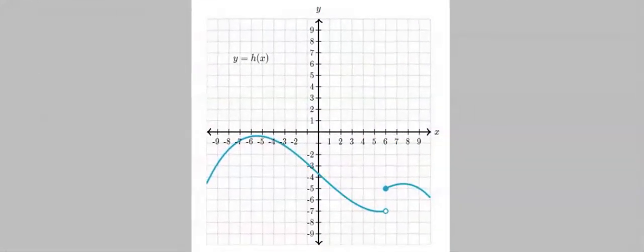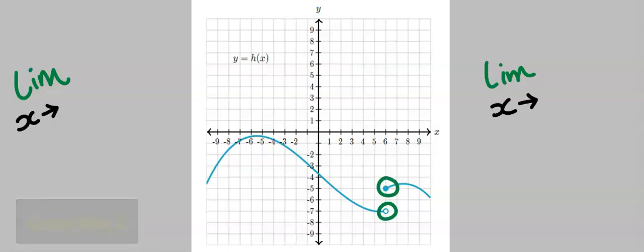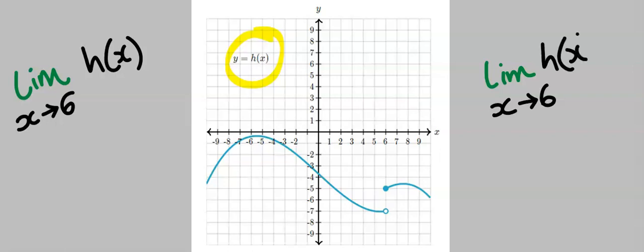Next, let's consider this question. To solve this problem, both holes align with 6, hence this limit is tending towards 6. The given function is h(x), and we are going to approach this graph from both the left and the right.